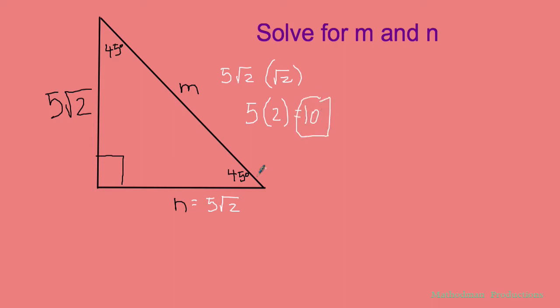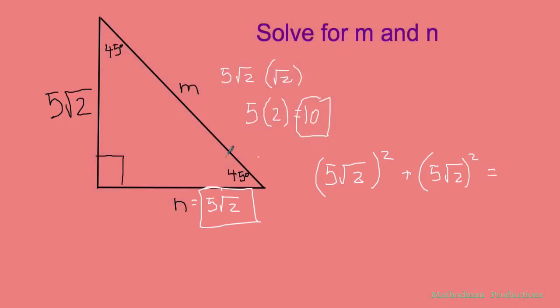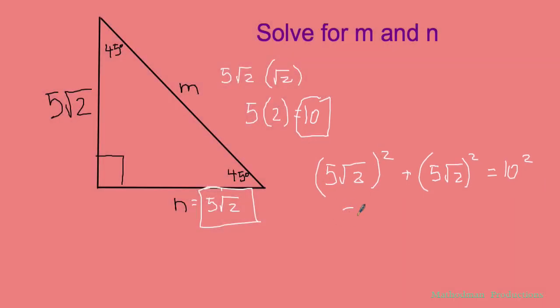So if you're doubting that that's right, we can check our answer by using the Pythagorean theorem. 5√2 squared plus another 5√2 squared equals my hypotenuse 10 squared. Well, this equals 50. Use your calculator. This is another 50, and that's just 100.